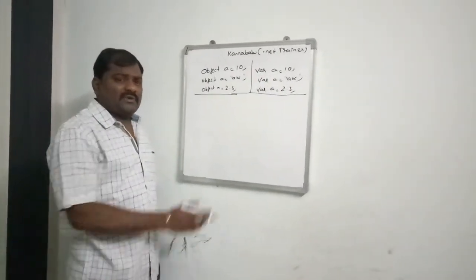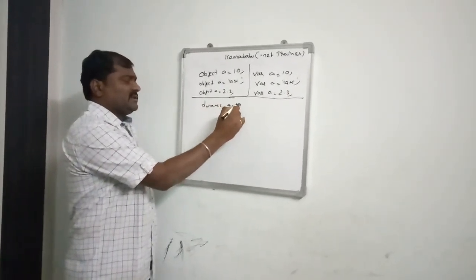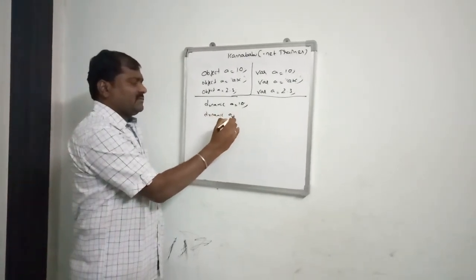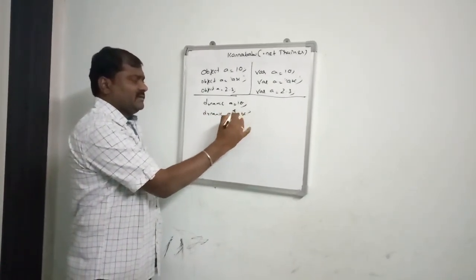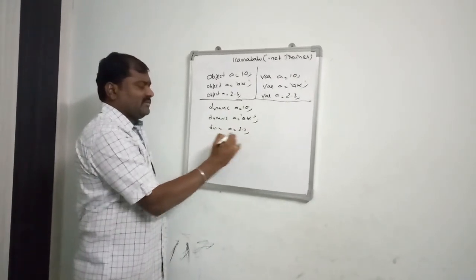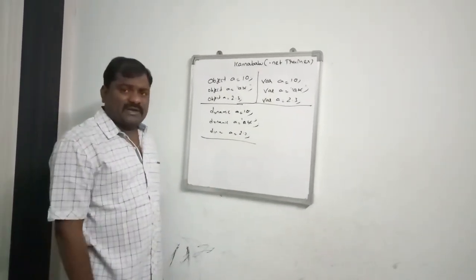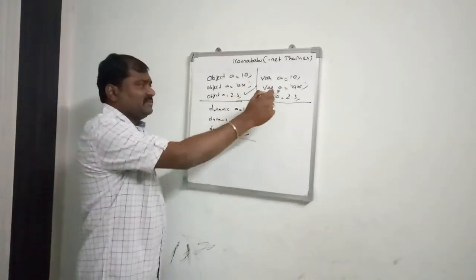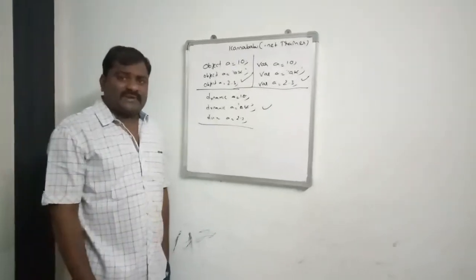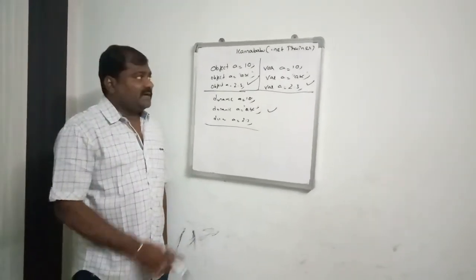Similarly, there is one more data type called dynamic. Dynamic a = 10 — valid. Dynamic a = 'abc' — valid. Dynamic a = 2.3 — valid. So we can store any type of value in dynamic. All three — object, var, and dynamic — look like the same. Let us see the differences between them.